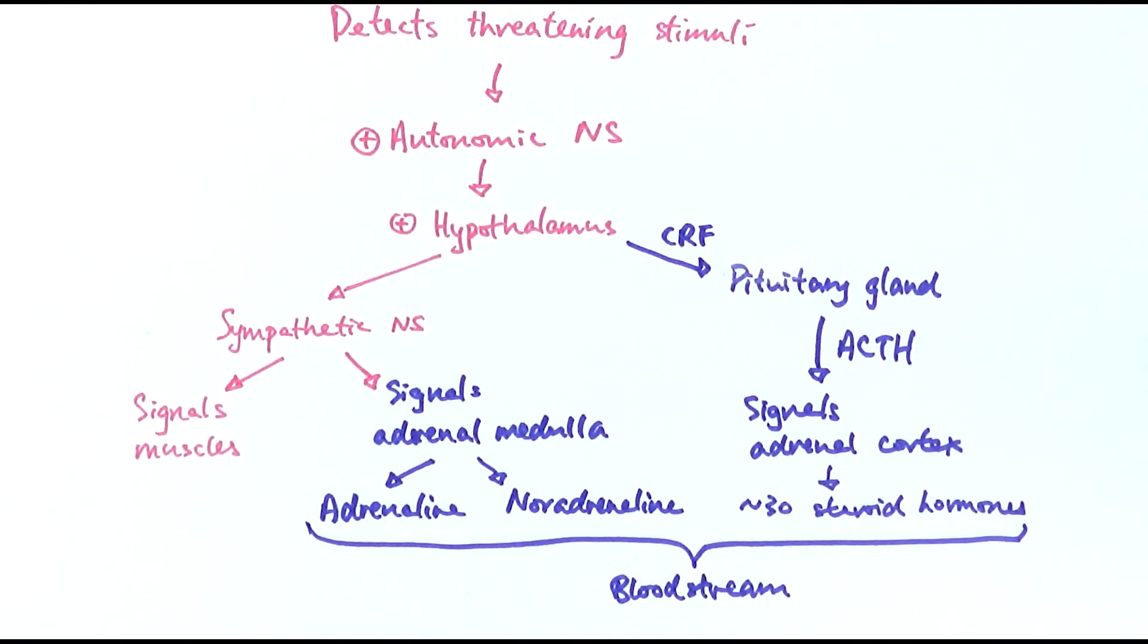Also the hypothalamus could release a chemical called CRF to signal the pituitary gland to release ACTH to signal the adrenal cortex to release more steroid hormones. All of these hormones that are released by the adrenal gland go into the bloodstream to travel to target organs to do various jobs to help the body prepare for a fight-or-flight response.